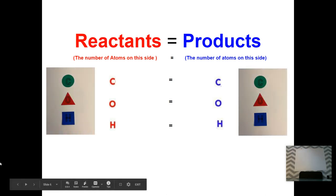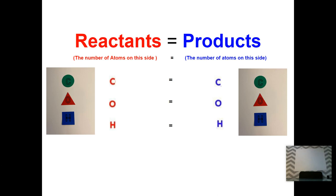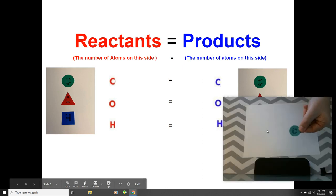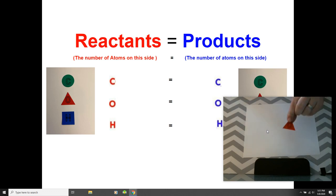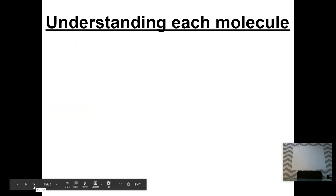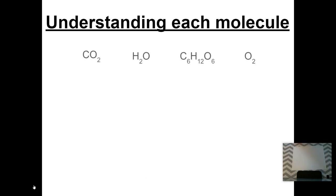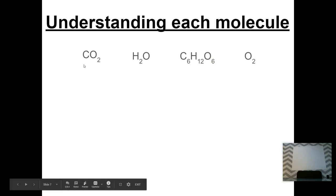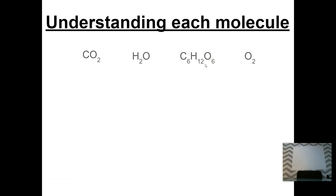We're trying to create a model to represent photosynthesis. I have some paper that will help us understand — I have some C's, some O's, and some H's. Because photosynthesis is just made up of some C's for carbon, some O's for oxygen, and some H's for hydrogen. Let's see if we can understand each molecule first. There are four molecules in the photosynthesis equation: carbon dioxide CO2, water H2O, sugar or glucose C6H12O6, and oxygen O2.